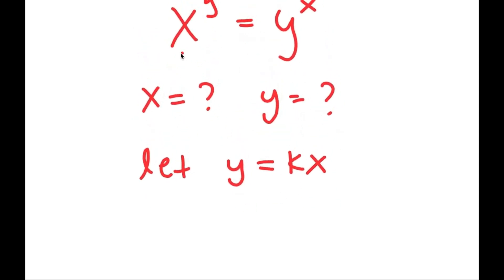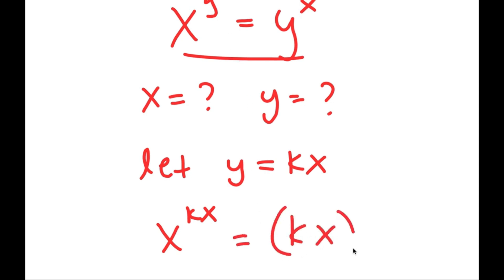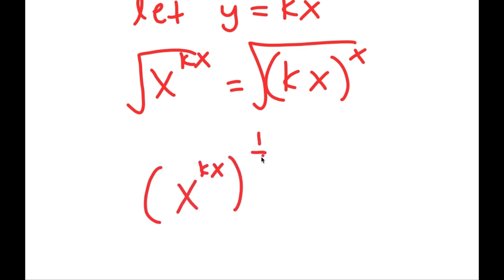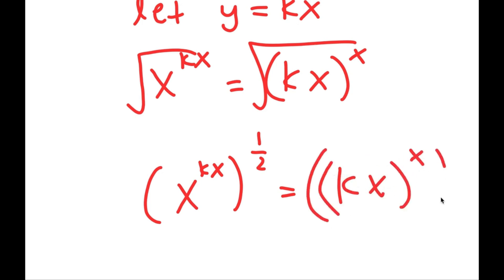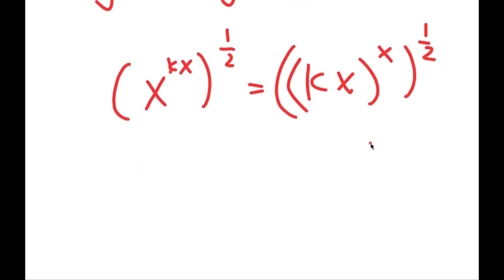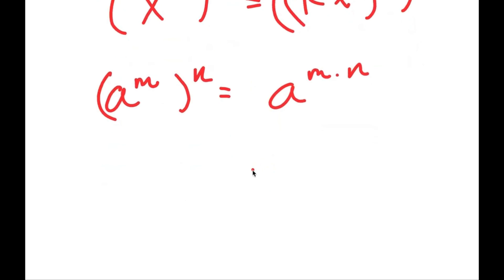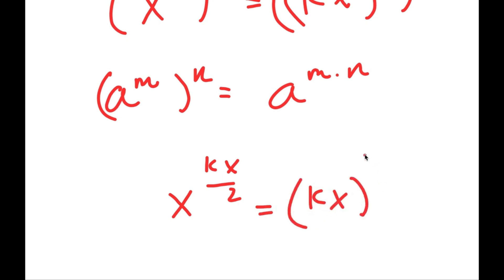Substituting kx for y, I get x^(kx) = (kx)^x. Now I'll take the square root of both sides, so x^(kx) to the power of one half equals (kx)^x to the power of one half. Using a^(m^n) = a^(m·n), this gives x^(kx/2) = (kx)^(x/2).